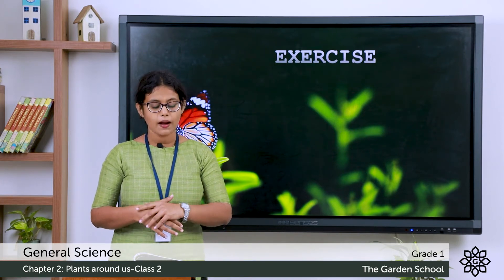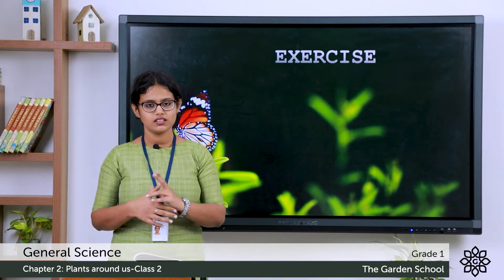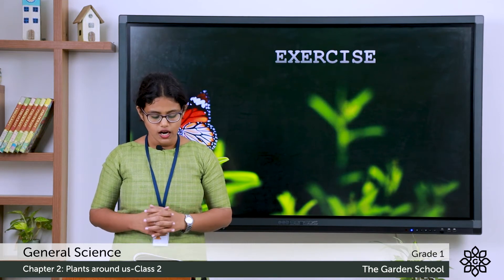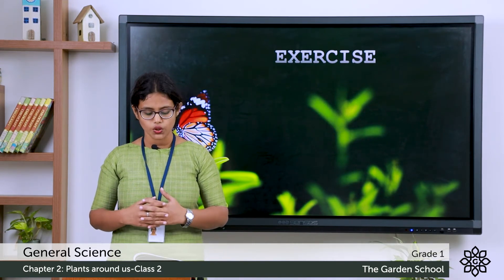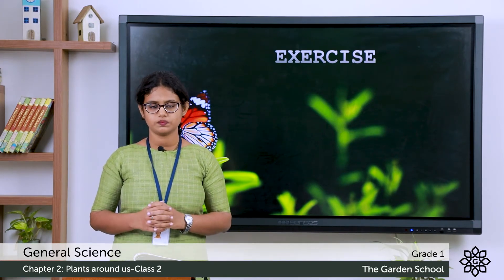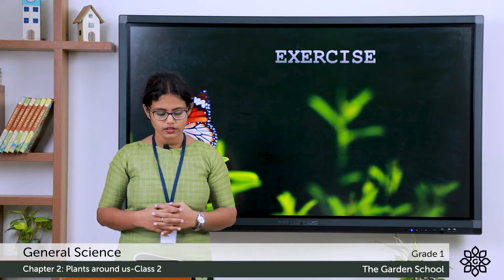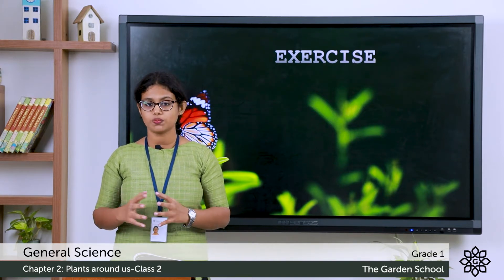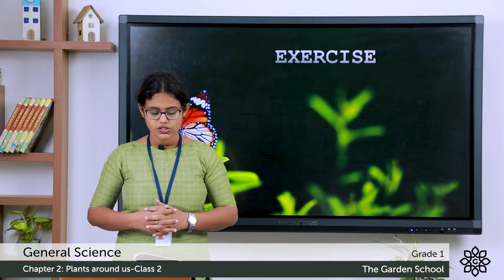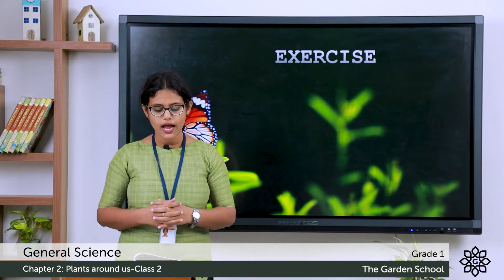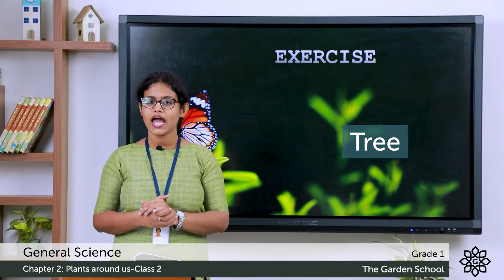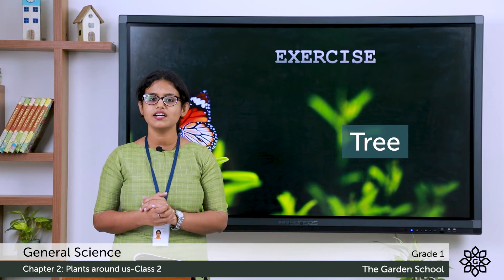First question: a mango plant is a — tree, creeper? Tick the right one. Second question: dash grow along the ground — creepers, climbers? Third question: a tree is a dash plant — small, big? The answer to the first one is tree: mango plant is a big plant and big plants are trees. So mango plant is a tree.